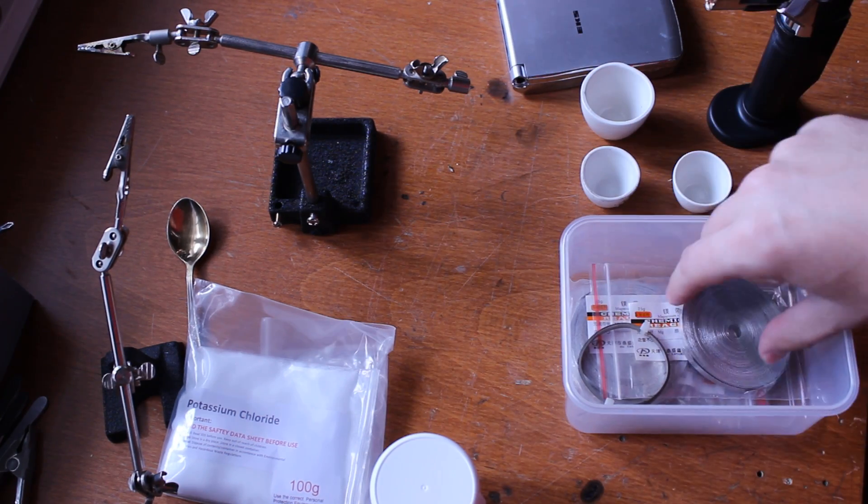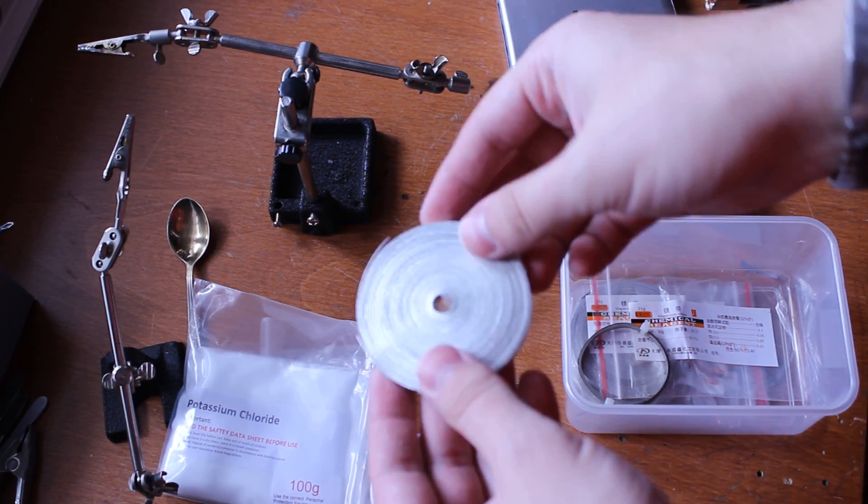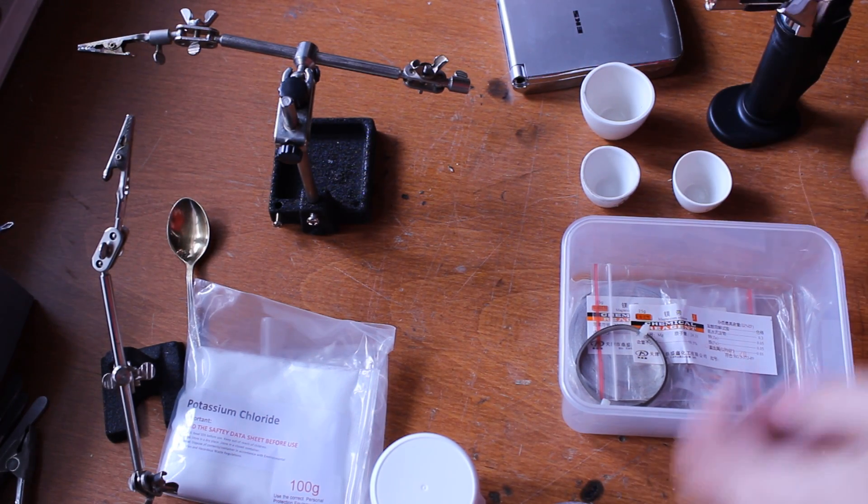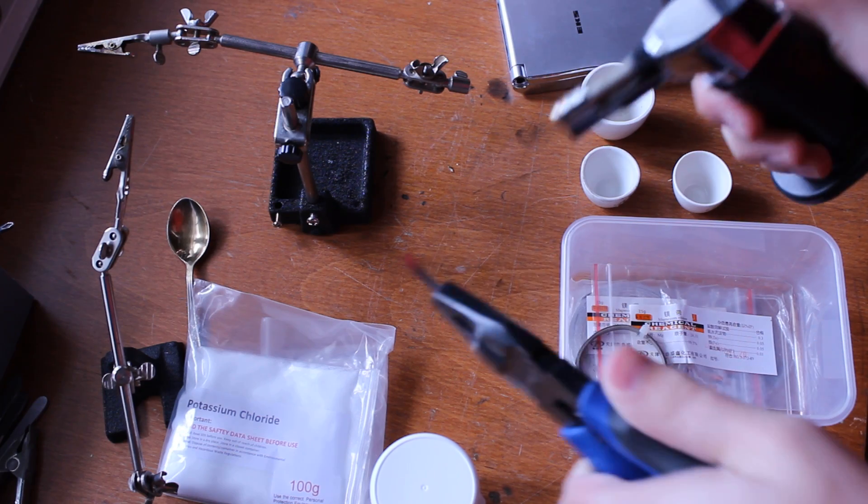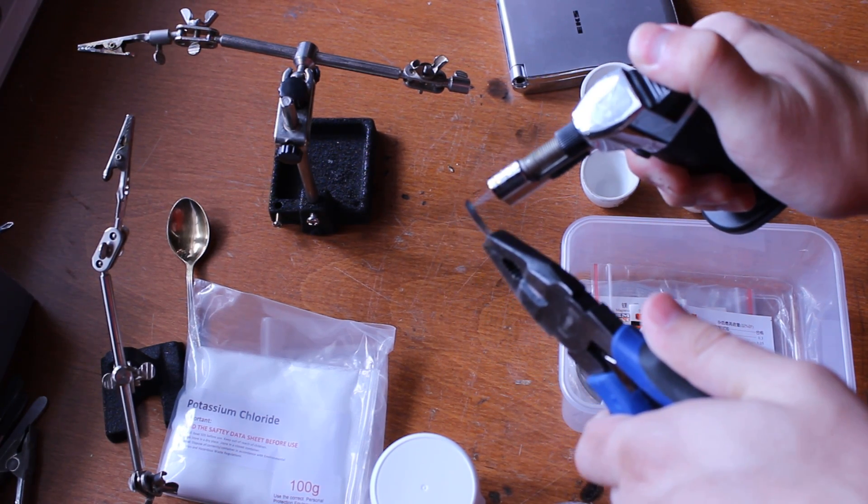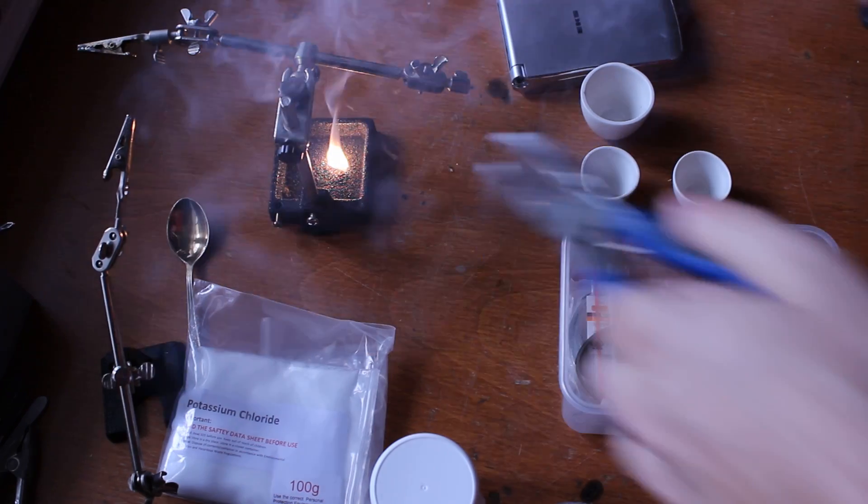The electrodes are going to be made out of nickel and magnesium. The whole thing is going to be heated up to about 400 degrees, which is good, because magnesium ignites at about 600 degrees.